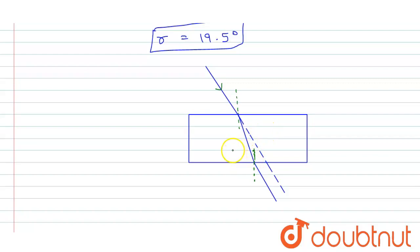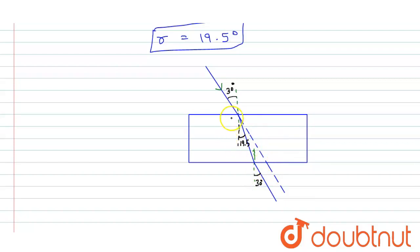When the light ray goes from the dense medium to the rare medium, it moves away from the normal and emerges parallel to the incident ray. The angle of incidence is 30 degrees, the angle of refraction inside the glass is 19.5 degrees, and the emergent angle is 30 degrees, which is equal to the angle of incidence. This is the incident ray and this is the refracted ray.